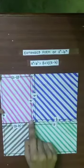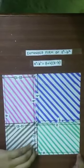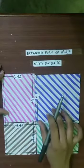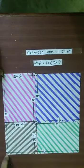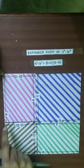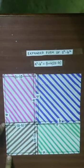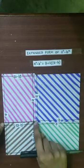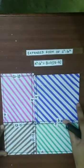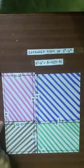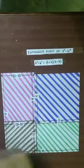We already know that this square has side b. So this side is b, this side is b, this side from here to here is b, and this side from here to here is b. Now, if this entire length is a and this side is b, then this remaining length will be a-b. So this length will be a-b. Similarly, this length will be a-b, this length will be a-b, and this length will be a-b.